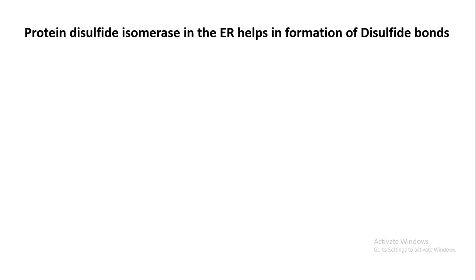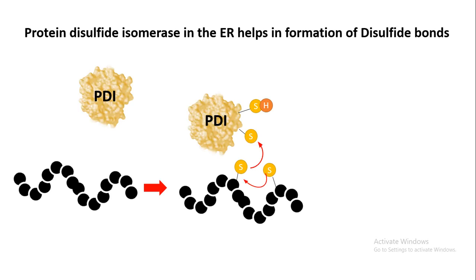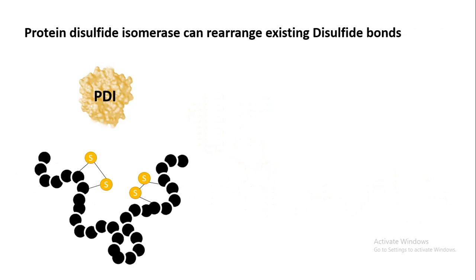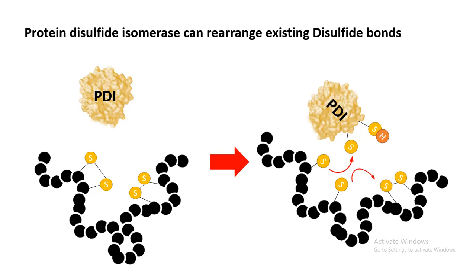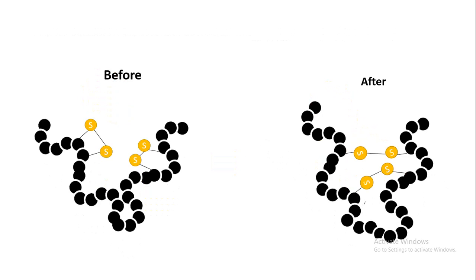Inside the ER there are protein disulfide isomerases which help in formation of disulfide bonds in proteins. Not only formation of disulfide bonds, protein disulfide isomerase can also rearrange existing disulfide bonds. Since disulfide bond rearrangement could lead to slight changes in protein conformation, it can also change various aspects of protein folding and thereby protein conformation.